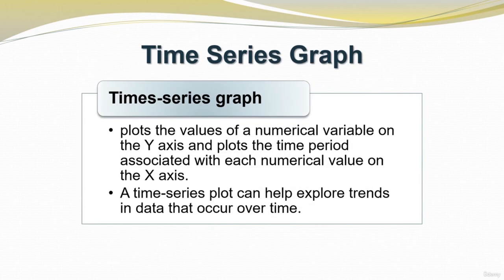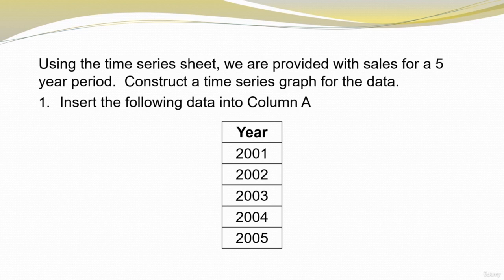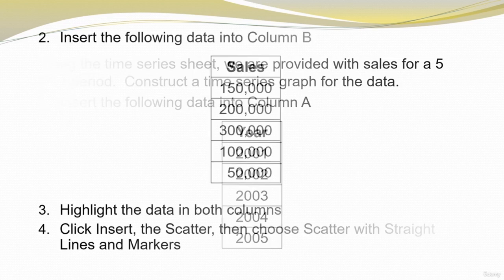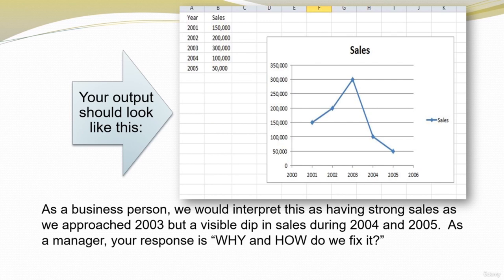Let's move on to the time series graph. This plots the values of a numerical variable on the y-axis and plots the time period associated with each numerical value on the x-axis. A time series plot can help explore trends in data that occur over time. We will construct a time series graph for sales data over a five-year period: put the time period data into column A and the sales data into column B. Highlight the data in both columns, click Insert, then Scatter, and choose Scatter with Straight Lines and Markers. A business person looking at this graph would interpret it as having strong sales approaching 2003, with a visible dip during 2004 and 2005 — a manager would like to know why and how to fix it.